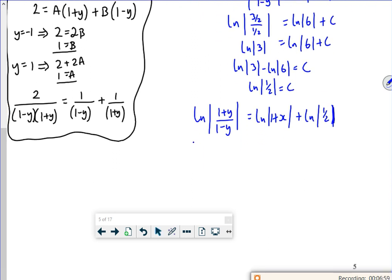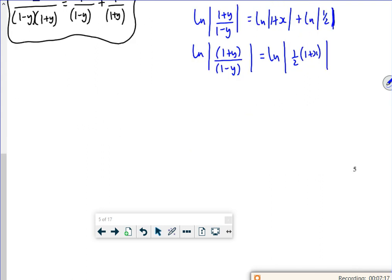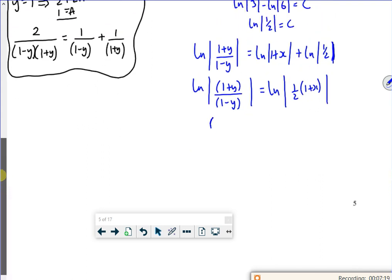So if I combine the right hand side now, there's a lot of logs going on. 1 plus y over 1 minus y. That's adding so it's multiplying. So log of a half of 1 plus x. Because I've got logs on both sides, I can antilog and get rid of the logs.